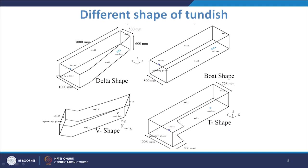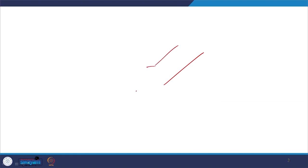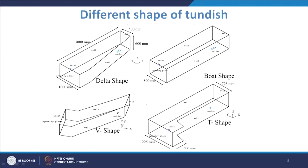The whole tundish is about 6000 millimeters. There is also the V-shape tundish, where you make a V-type shape with a 45-degree angle extending on both sides. Another shape reported in the literature is the T-shape, where up to a certain distance you have a larger width with a slanting slope, and then it becomes smaller.